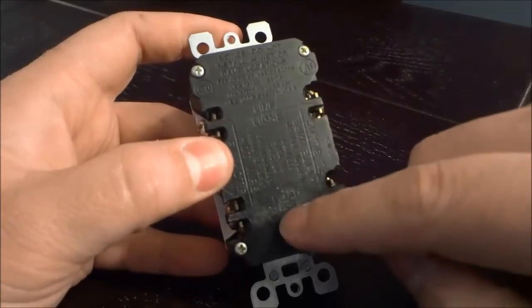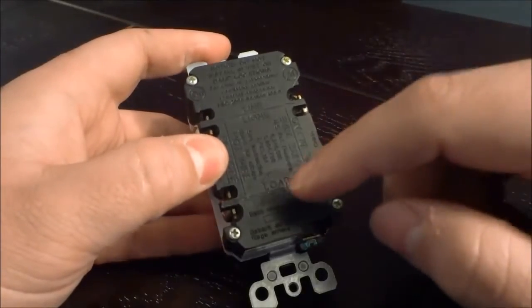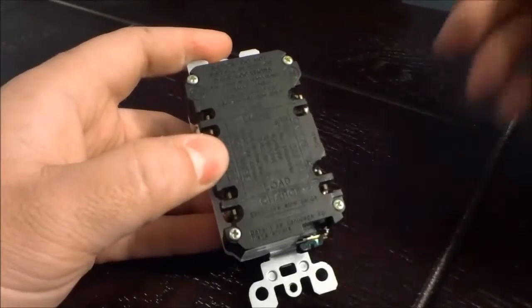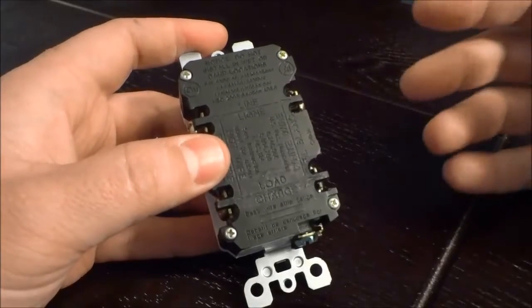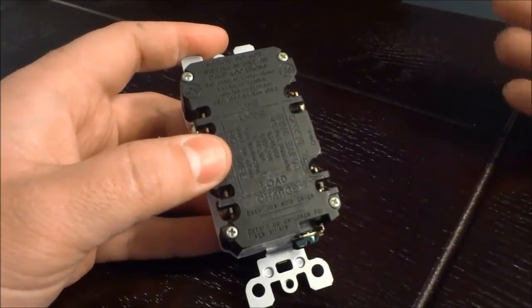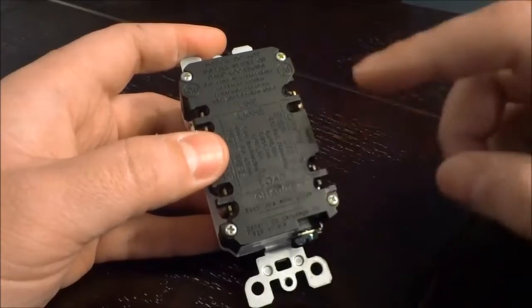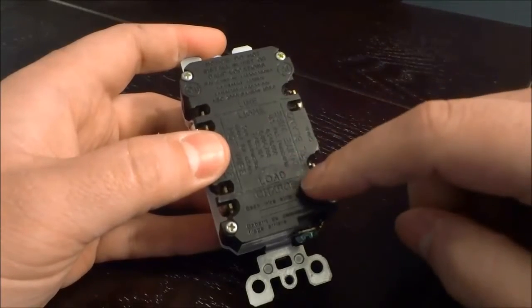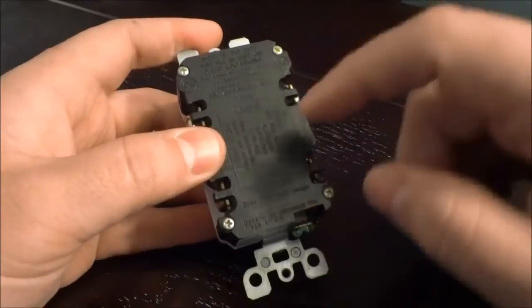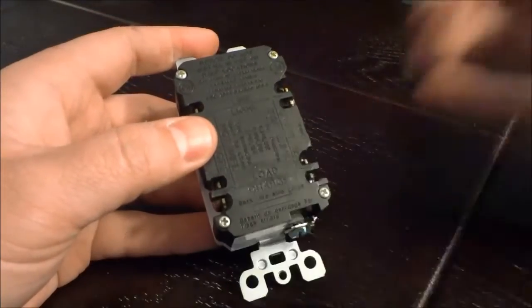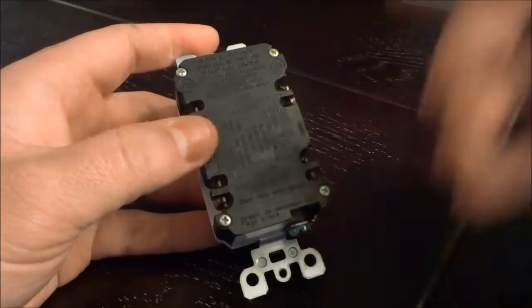Now the load is for power that is going out after the GFCI receptacle. So if you had a few other outlets or receptacles that were connected after the GFCI—with regards to the circuit after the GFCI—then you would connect the next set of electrical wires to the load.